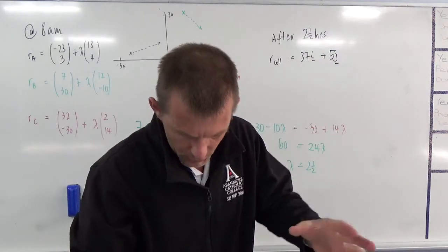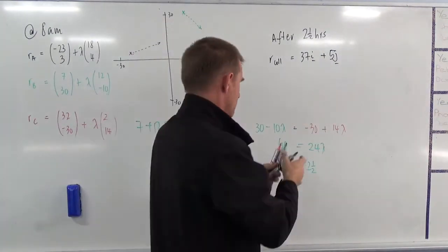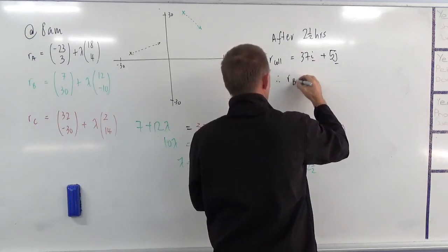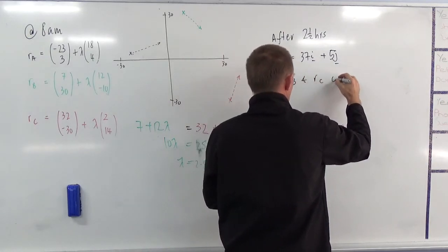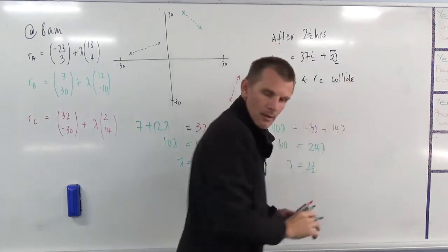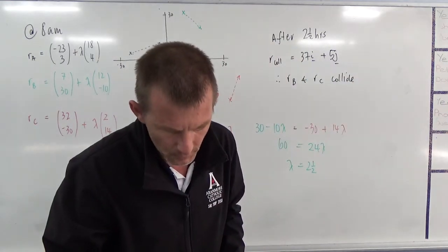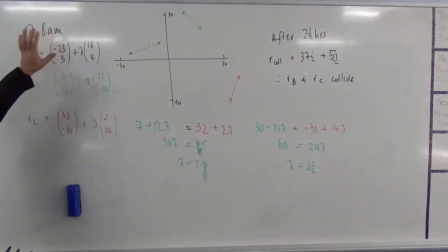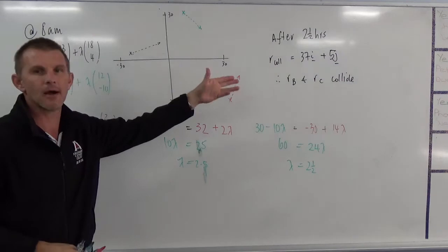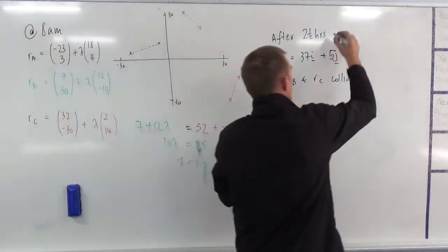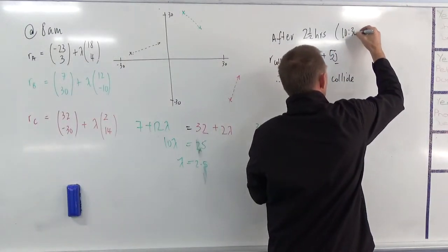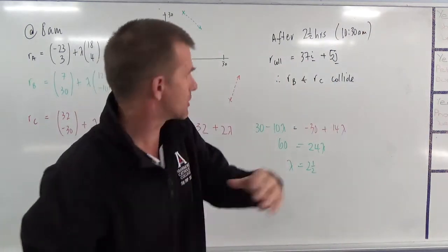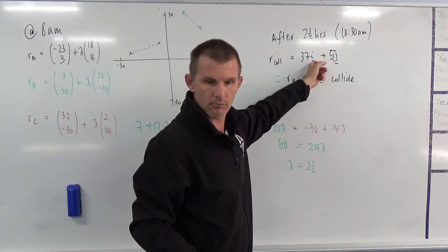Now, as a quick check. Well, maybe not quick, but let's go here. 2.5 times that. 2 times that is going to be 24. Another half is going to be 30. 37. Yes. 2.5 of that is going to be 25. 30 minus 25. Yes. It is going to work. So the question said, which two will collide? So it's going to be, therefore, what do we have? R_B and R_C collide. And the time of collision. Now, the question said from 8 a.m. This is where they started at 8 a.m. So 2.5 hours would say 10:30 a.m. And the position of their collision.